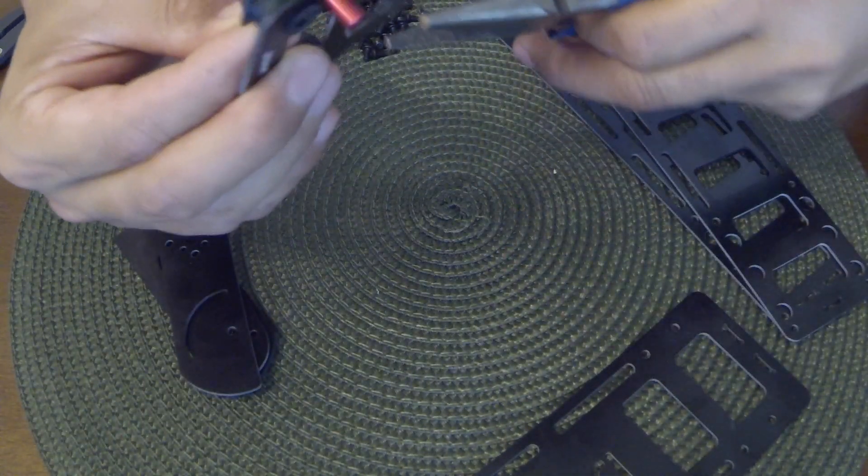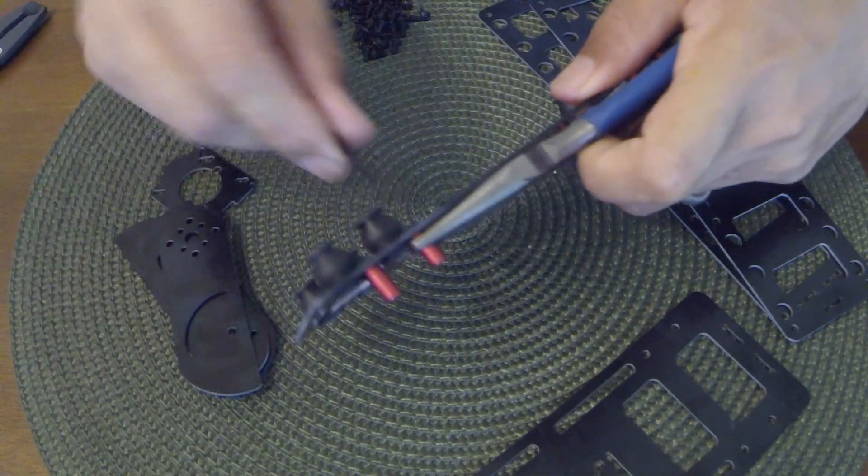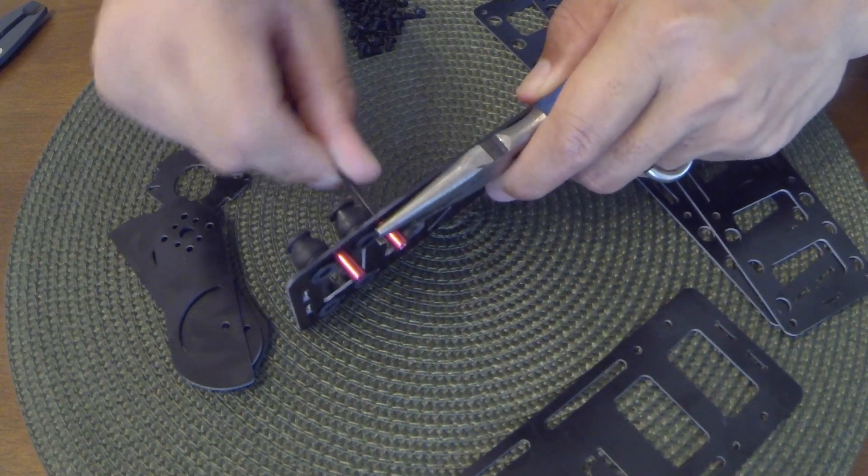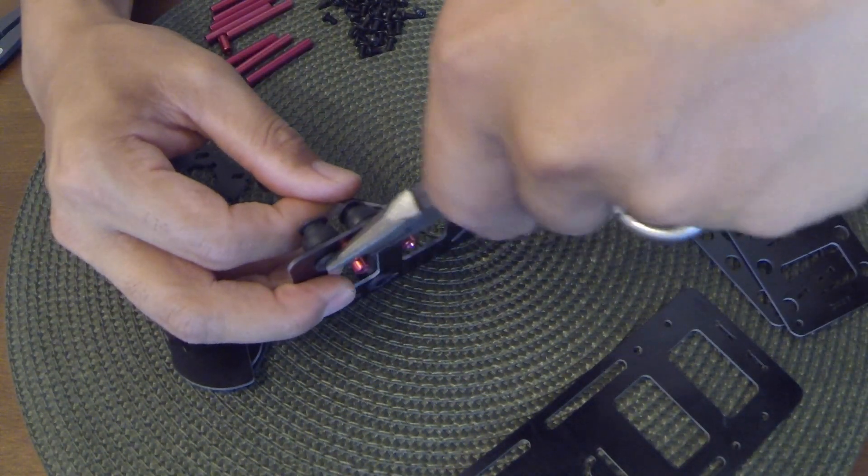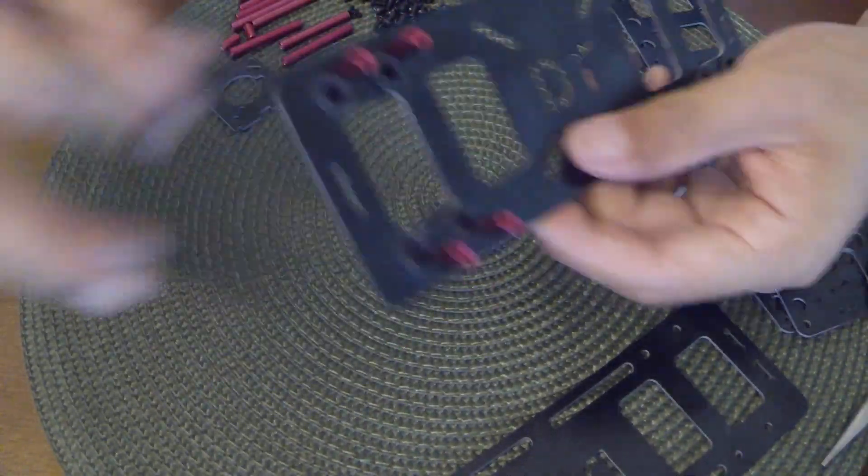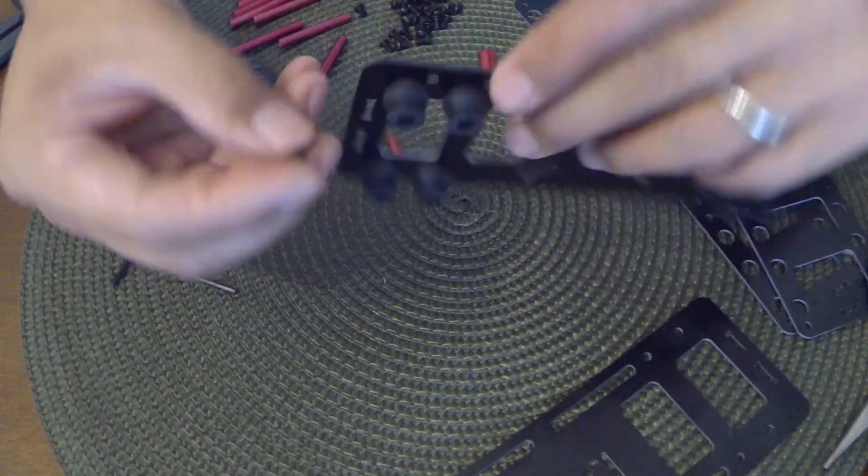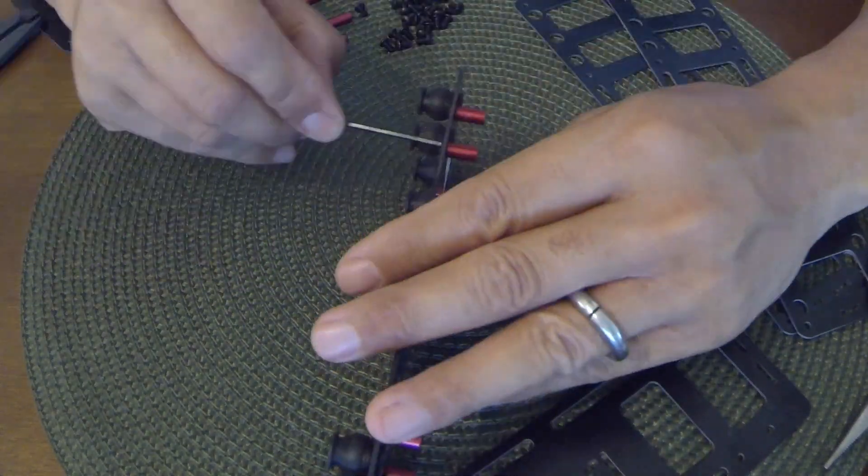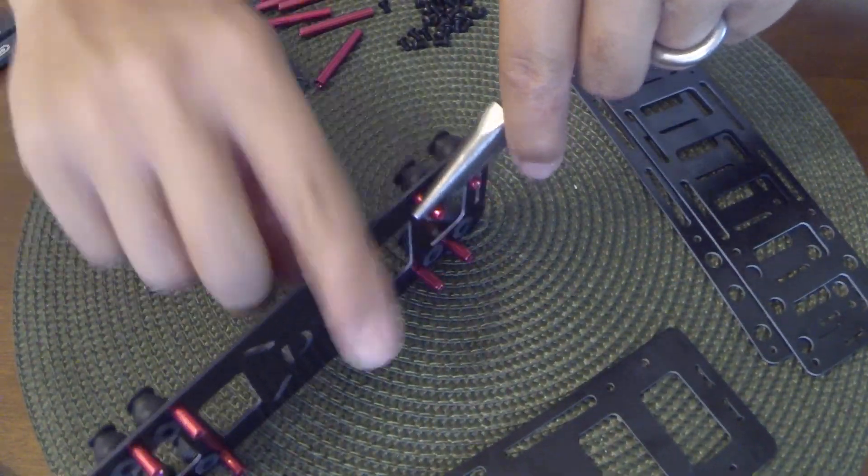Accessing these screws once the frame is assembled is pretty difficult. So I didn't do it in here because I was planning on disassembling this to install electronics again. But I would use some thread locker on these screws for the final assembly.